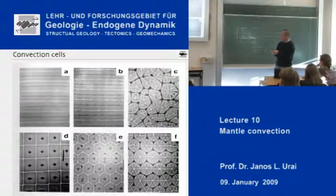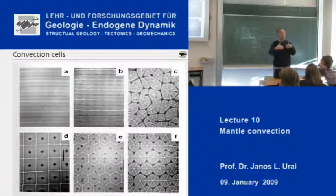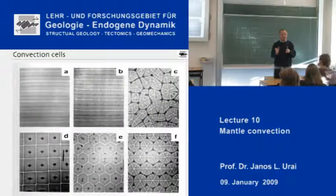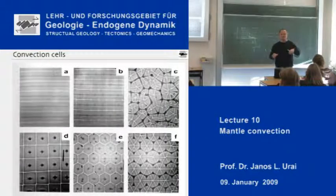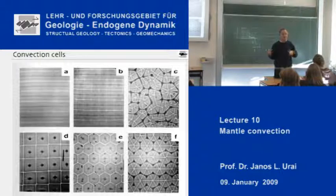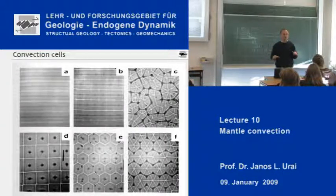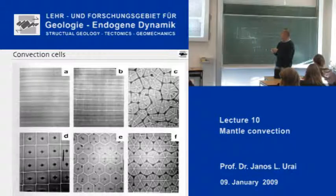And then again, if you change the conditions, you could make hexagonal patterns of convection cells. If you make the fluid a little bit heterogeneous — drop a few stones into it or something like that — then the convection cells will become irregular and you will get patterns like this.